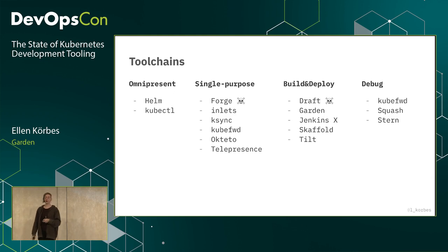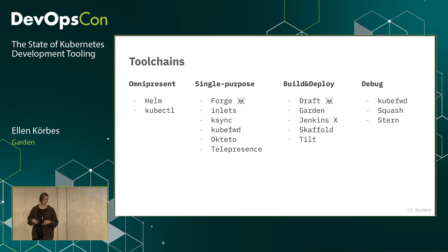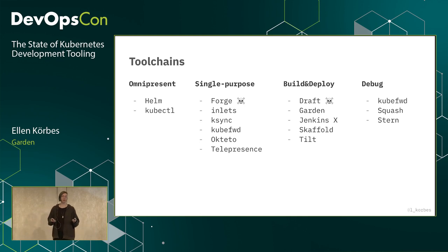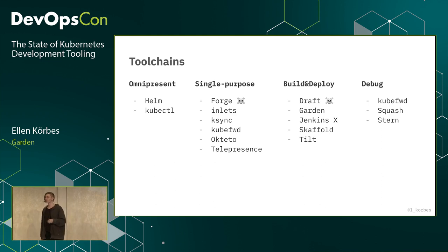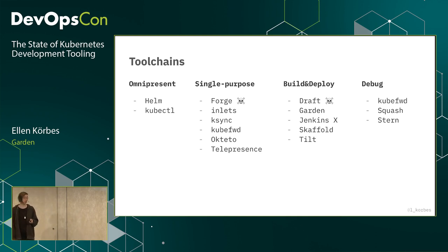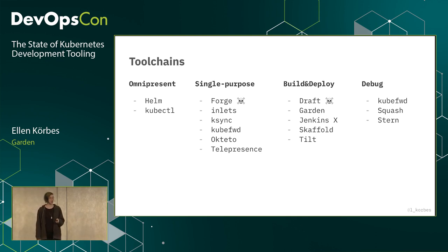For debugging: KubeForward lets you inspect cluster endpoints from your local host. Use Squash if you like debuggers. Use Stern if you like print line debugging — except if you're using Tilt, you don't really need Stern because the logging there is just perfect. For the build-and-deploy category: don't use Draft because it's dead, don't use Jenkins X because it's basically Skaffold wrapped up, don't use Skaffold because there's Tilt which does the same thing better. Really it's between Tilt and Garden — one company I work for and the other I used to work for, so this is going to be awkward.